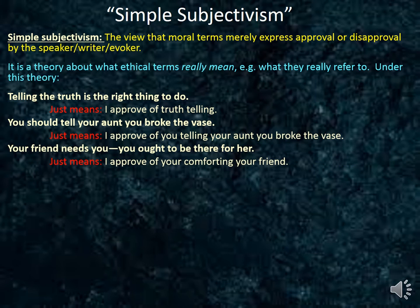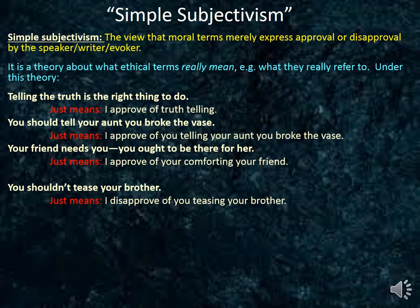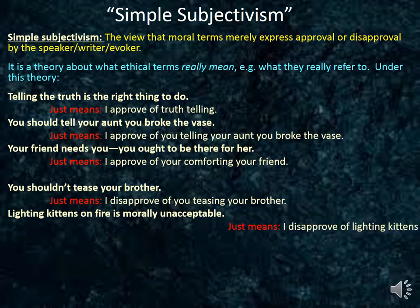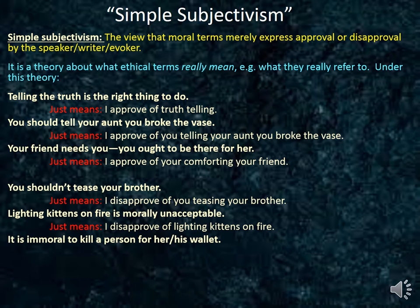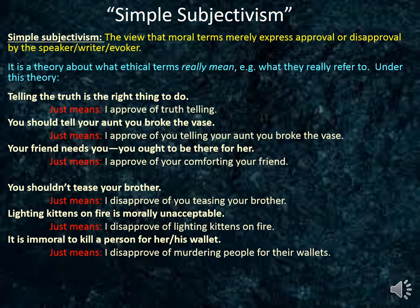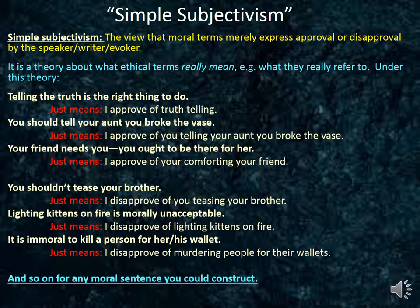It just means 'I approve of you comforting your friend.' Or, 'you shouldn't tease your brother' just means 'I disapprove of you teasing your brother.' Or, 'lighting kittens on fire is morally unacceptable' really just means 'I disapprove of lighting kittens on fire.' And as a final example, a statement like 'it is immoral to kill a person for his or her wallet' isn't a statement about objective facts — it just means 'I disapprove of murdering people for their wallets,' and so on for any moral sentence you could construct.